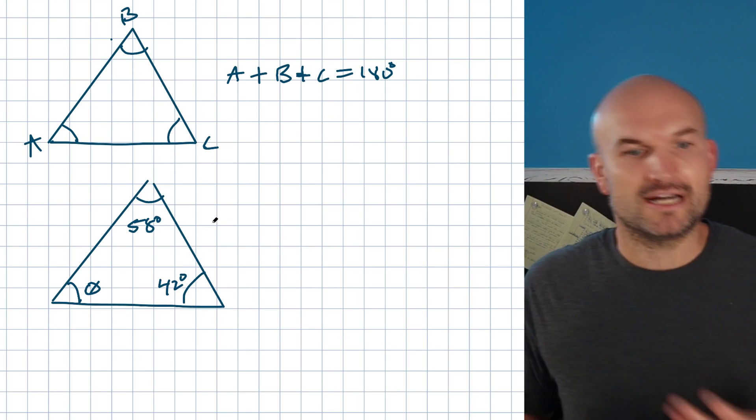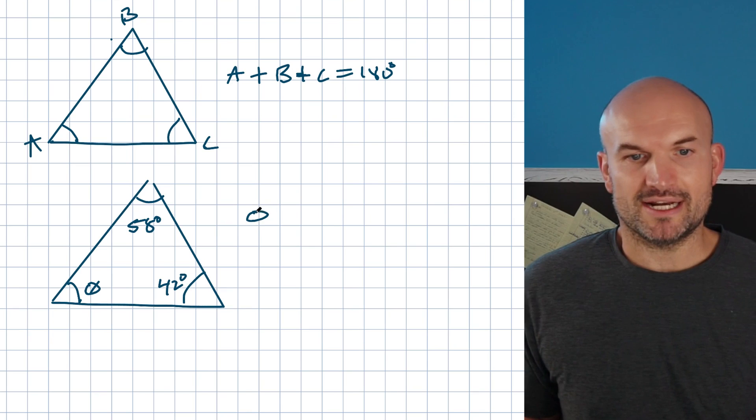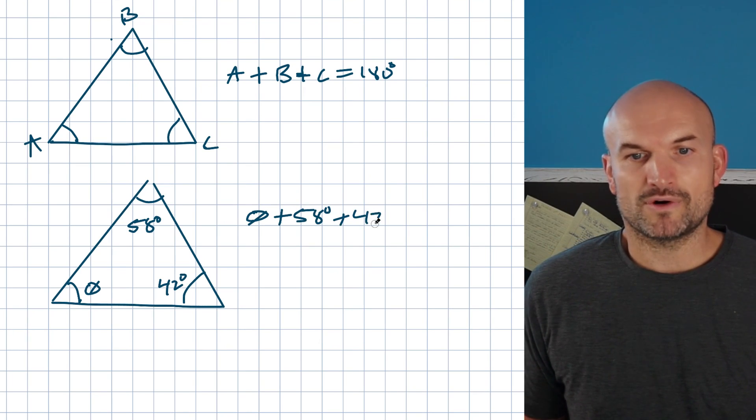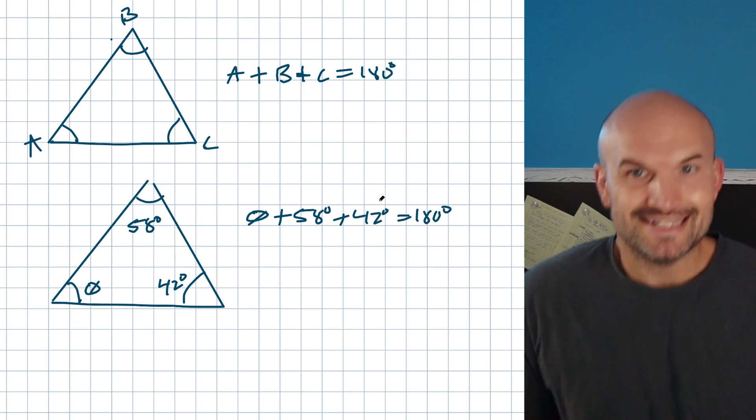Now, if I wanted to find the missing side of my triangle, basically all I need to do is write an equation. I could say theta plus 58 degrees plus 42 degrees is equal to 180 degrees.